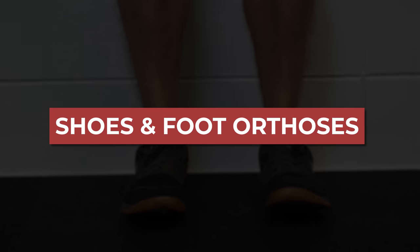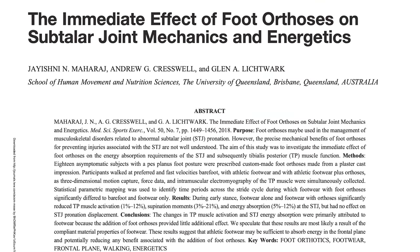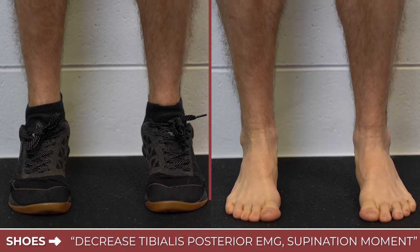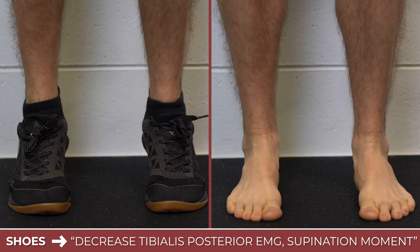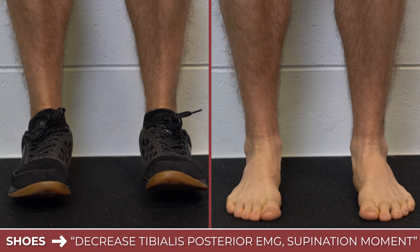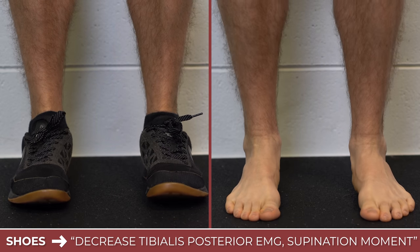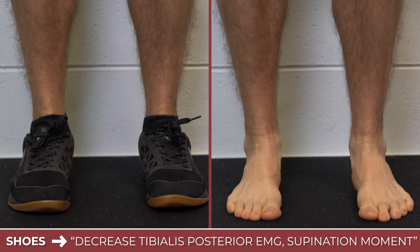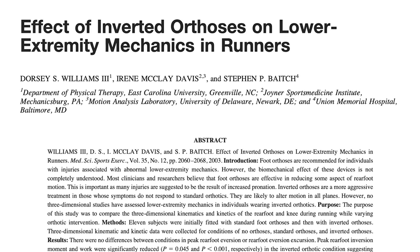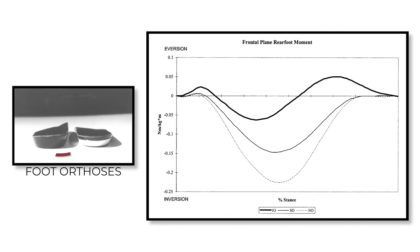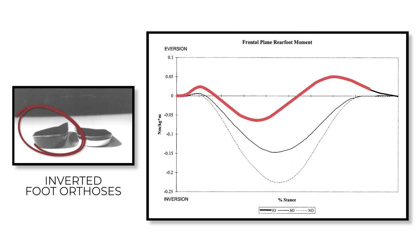Shoes and foot orthoses. Most people want to know if they should wear specific shoes or foot orthoses, and it's an important consideration if you're experiencing symptoms associated with tibialis posterior tendinopathy. A study by Maharaj in 2018 found that supportive athletic footwear may be beneficial because it helps decrease the amount of work done by the tibialis posterior during walking compared to a barefoot condition in individuals with flat feet. A study by Williams and colleagues in 2003 demonstrated that inverted foot orthoses may reduce the loads experienced by the tibialis posterior without actually changing the foot mechanics.